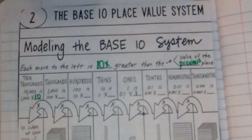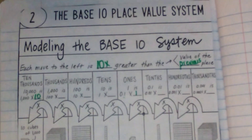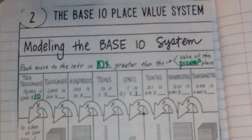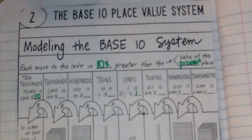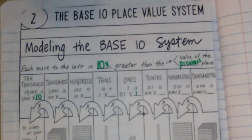Hi friends. We are going to be going over the base 10 place value system in a little bit more detail using base 10 blocks, like we did yesterday when we talked about the value of a digit in a specific place value — such as if you have a four in the ones place, it is going to be one tenth of a four in the tens place, because it is one space to the right.